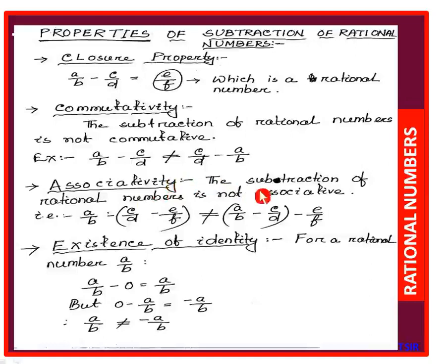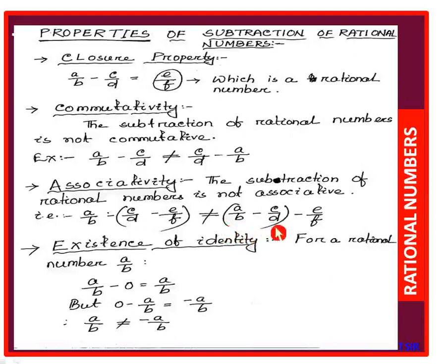The subtraction of rational numbers is not associative. For example, if A/B, C/D, and E/F are three rational numbers, then (A/B - C/D) - E/F is not equal to A/B - (C/D - E/F). In case of addition, associativity holds, but not for subtraction.